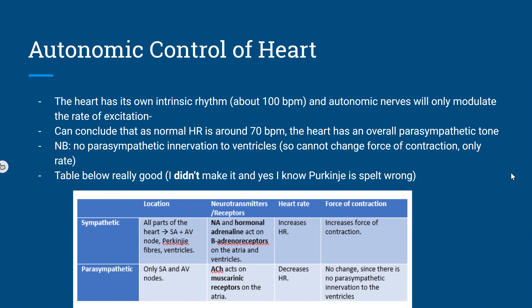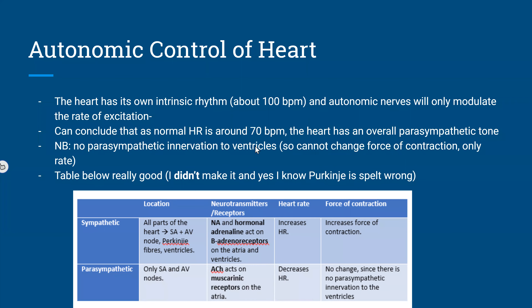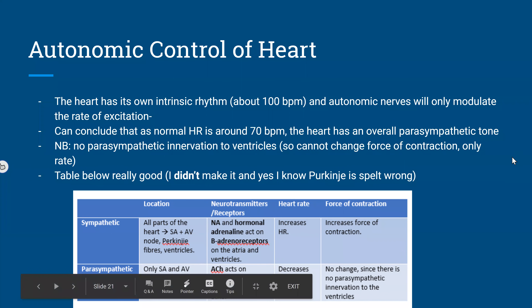Overall, there is autonomic control of the heart. The intrinsic rhythm is about 100 beats per minute, and autonomic nerves only modulate the rate of excitation. Since normal heart rate is around 70 bpm, the heart has an overall parasympathetic tone. Importantly, there is no parasympathetic innervation to the ventricles, so it can change the rate but not the force of contraction.